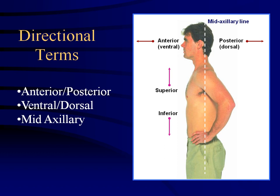Anterior and posterior: this line divides the body into front and back. The front is the anterior — also called the ventral side. The back is posterior, also called dorsal. Any fishermen? The dorsal fin is on the back — easy way to remember it. Mid-axillary is the line that runs down the middle of the axilla; anterior axillary would be right at the front of the armpit.